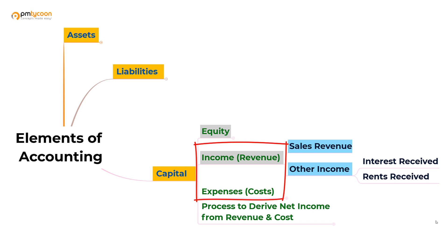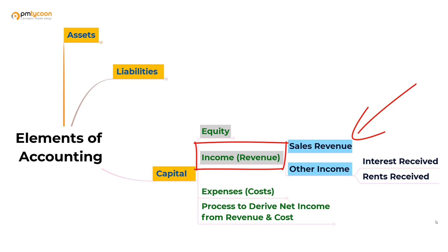Let us understand incomes and expenses and their types. Let's start with income. The other name for income is revenue. There are two types of incomes or revenues that a firm can generate: revenue from day-to-day sales from its core business activities, or revenue generated from activities outside of their core operations.